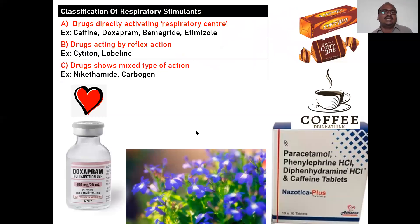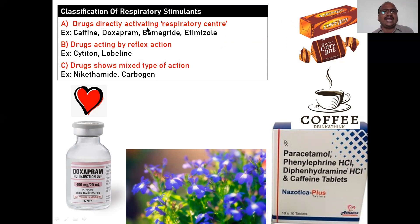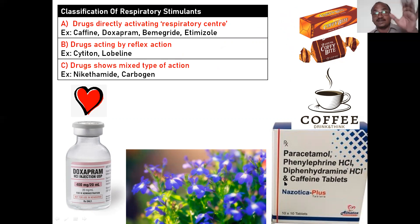Now the classification. Among all the drugs, only two or three are very important. Based on mechanism of action: drugs directly activating the respiratory center present in the medulla — like caffeine. Coffee and caffeine tablets are also available. Doxapram — you can remember by the Hindi word 'Prem,' meaning love, so 'Doxa-Prem.' Keep both names in mind: caffeine and Doxapram.